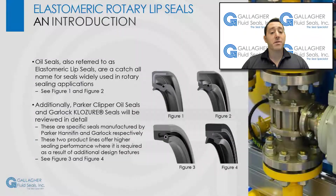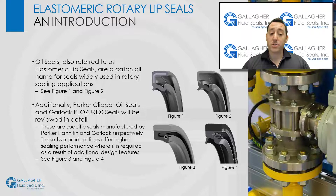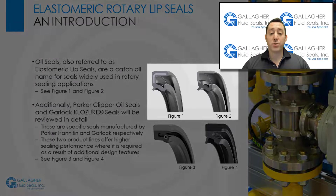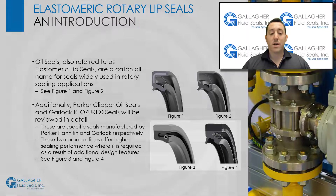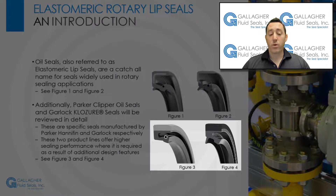There are three specific types of elastomeric lip seals that we will review. Oil seals, also known as elastomeric lip seals, are a catch-all name for seals widely used in rotary sealing applications. See figure 1 and figure 2 on the right as a reference. Additionally, the Parker Clipper oil seal and Garlock closure seal will be reviewed in detail in this video. These two product lines offer higher sealing performance where it is required as a result of additional design features. See figure 3 and figure 4 on the right.